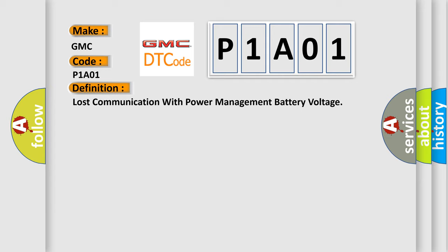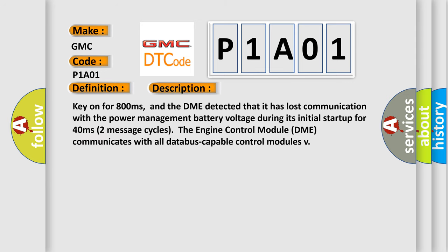And now this is a short description of this DTC code. Key on for 800 milliseconds, and the DME detected that it has lost communication with the power management battery voltage during its initial startup for 40 milliseconds. Two message cycles - the engine control module DME communicates with all database-capable control modules.